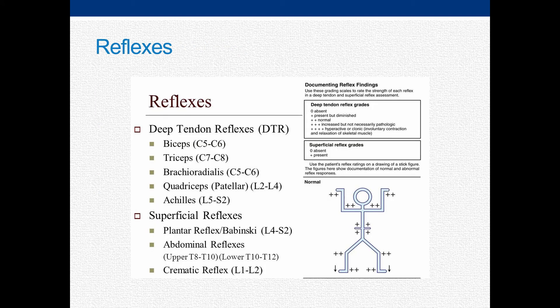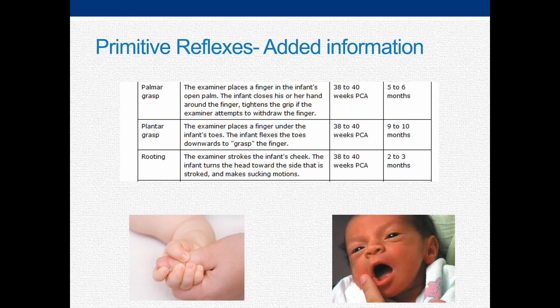The assessment of deep tendon reflexes is in keeping with the adult exam with the grading scales remaining the same. Deficits should raise concern for spinal injury. The relevance of the positive Babinski sign when assessed in the plantar flexion reflex will be dependent on age. Extension and abduction of the toes may not be integrated until about 2 years of age, given the incomplete myelination of the corticospinal tract, and thus may not be an indication of upper motor neuron injury in the infant or toddler. An awareness of basic primitive reflexes may be beneficial when assessing an infant and useful when completing a more in-depth secondary assessment once determined stable.